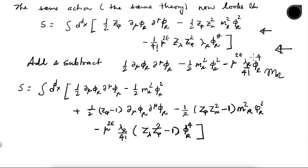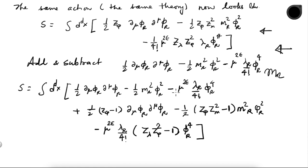I have added and subtracted the entire standard action — the only difference is that instead of phi I now have phi_r, but it looks exactly the same. When writing the Feynman rules I will have exactly the same Feynman rules with the parameters renamed, plus a factor of mu to the 2 epsilon in the vertex. But there are also additional vertices coming from the new terms.